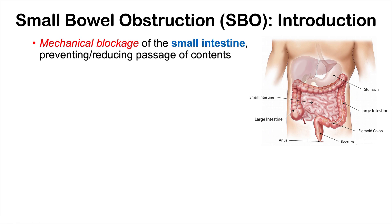A small bowel obstruction is a mechanical blockage of the small intestine, preventing or reducing passage of contents. This mechanical blockage can be a twist or a kink in the small intestine, and can be caused by a variety of things we're going to talk about in the upcoming slides.